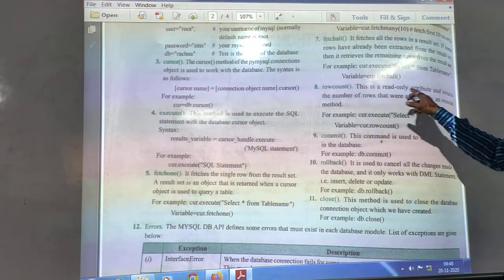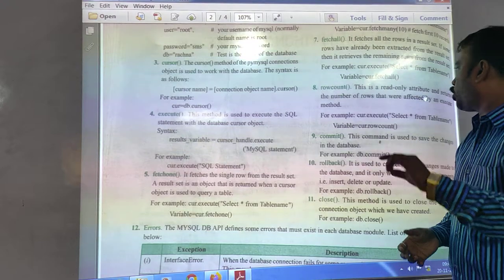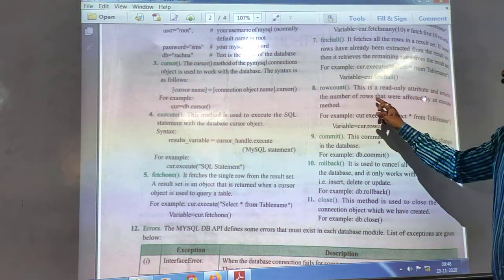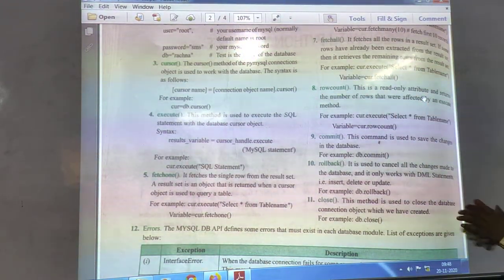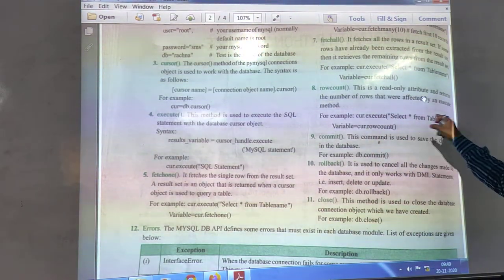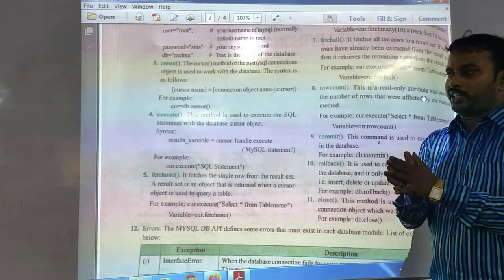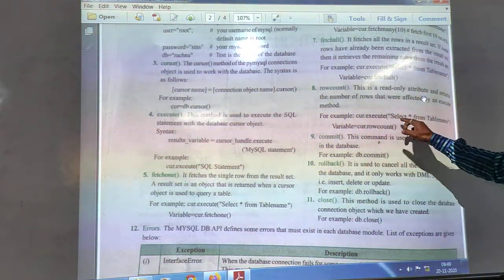What is the meaning of row count? This is the read-only attribute. Attribute, you know that, it's actually called a column. And it returns the number of rows that were affected in the execute method. So you write cursor.execute select star from table name. Select star from table name means all the data you can retrieve from that particular section.